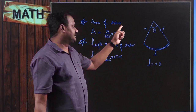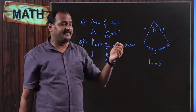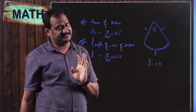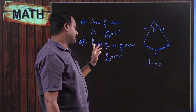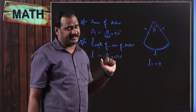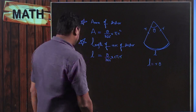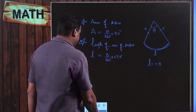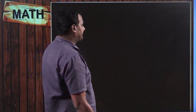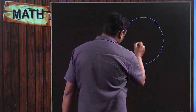To repeat: area of sector = θ/360 × πr², where θ is the angle made by the arc at the center, measured in degrees. Similarly, length of arc of sector = θ/360 × 2πr. In this chapter, we deal with a few figures in order to find the shaded regions.